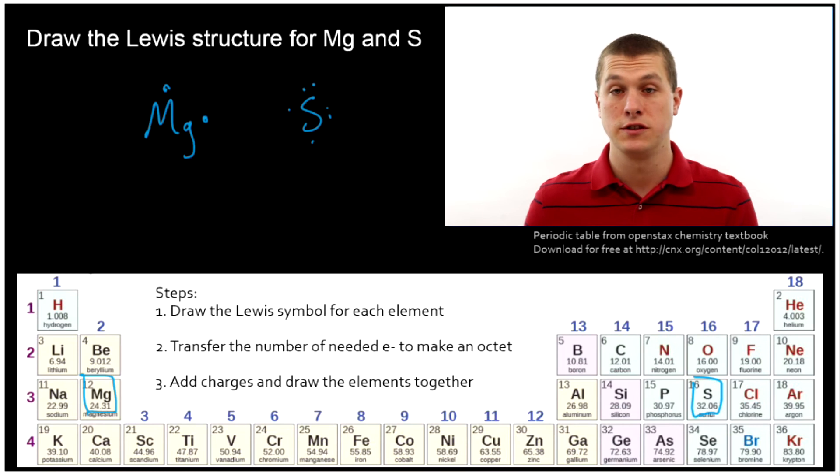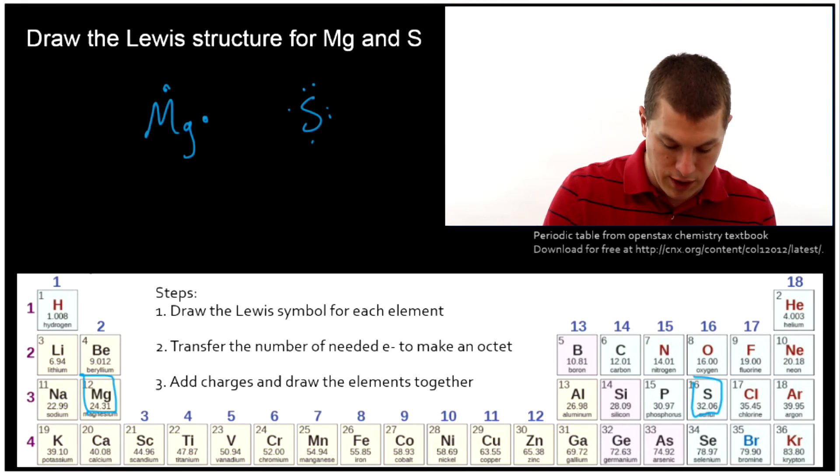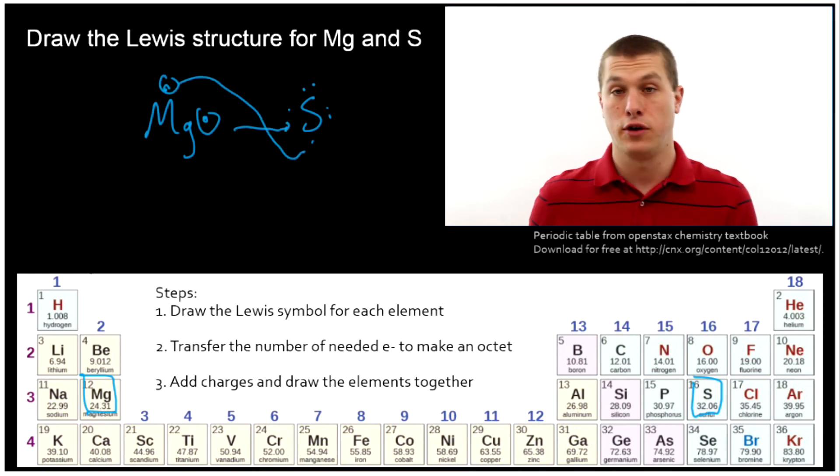So sulfur needs two electrons more to get an octet. And magnesium provides exactly those two. So even though sulfur needs two, it can get both of them from magnesium. So this is a little different than sodium, which can only give up one electron. Because magnesium can give one electron to here and one electron to there, then sulfur will have an octet and will form our ionic compound.